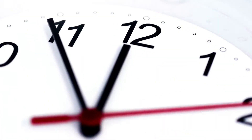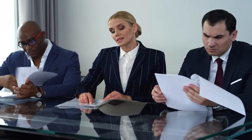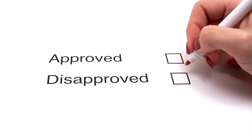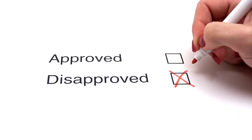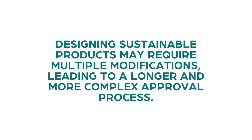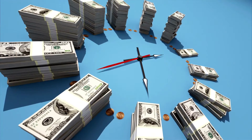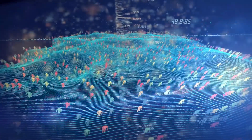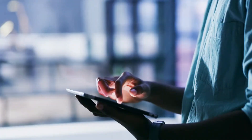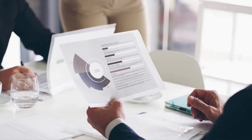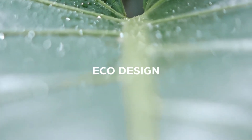However, there are challenges associated with product eco design. The design process for new products can be time-consuming, often taking up to two years due to the series of approvals required for materials, costs, compliance, risk, and procurement. If any of these steps are not approved, the product redesign process must start from scratch. Designing sustainable products may require multiple modifications, leading to a longer, more complex approval process. This can impede an organization's ability to produce in a timely manner and maintain competitiveness in the market, making it crucial to establish an efficient process that streamlines the design of sustainable products.